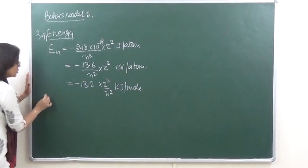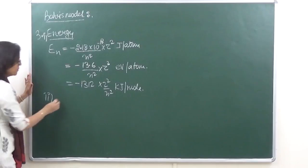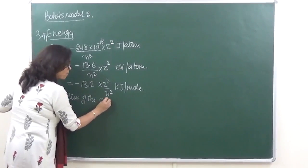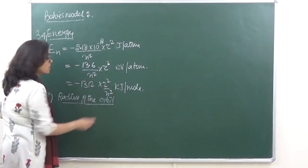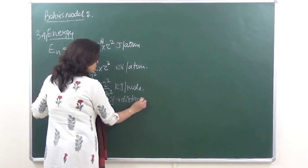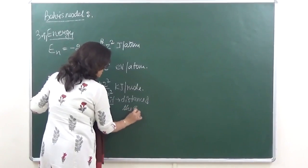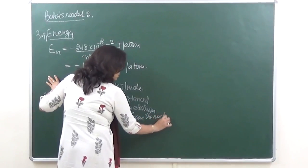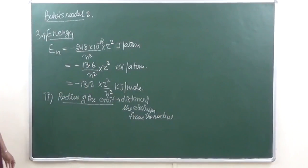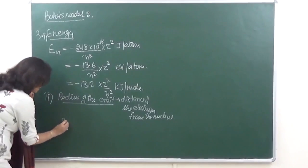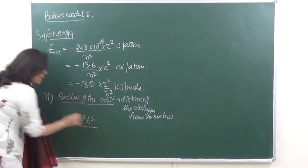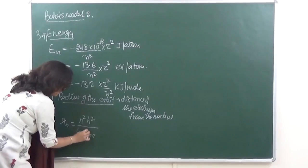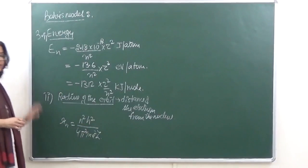Energy ke saath, Bohr ne help kiya to calculate the radius of the orbit, or in other words distance of the electron from the nucleus. So for that, a formula was given: the radius rn that is equal to n square h square upon 4 pi square m e square into z.